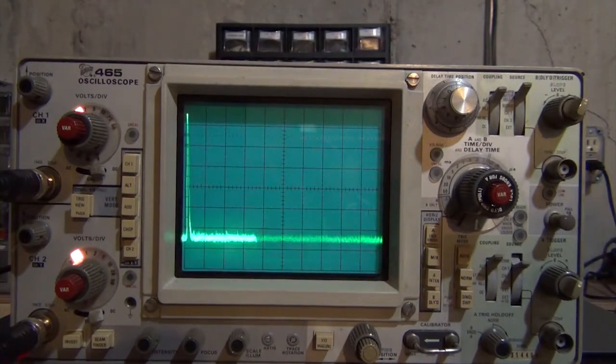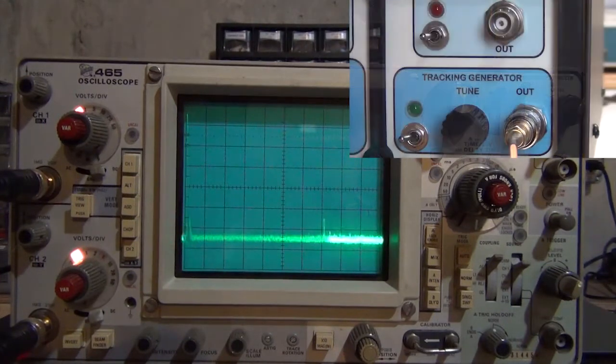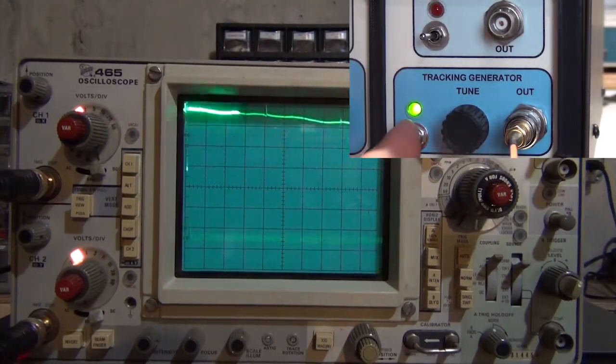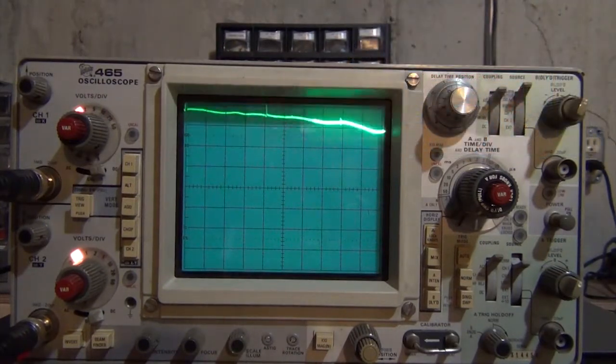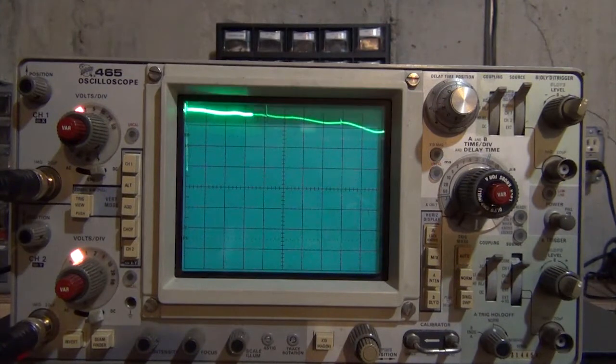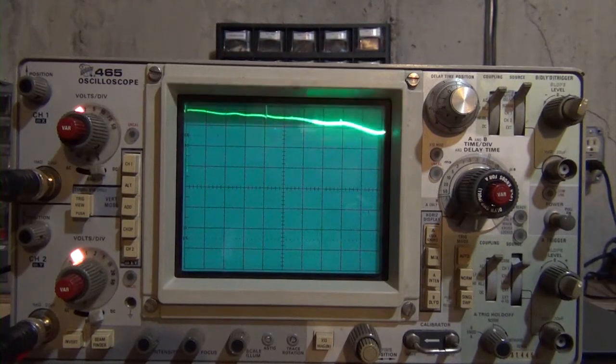The final feature I want to show today is the tracking generator. And what I've done is reconfigured the input cable to the output of the tracking generator. And I'll go ahead and turn that on now. And as you can see, it's definitely not perfectly flat. And one of the features that I would like to have in this SA is a way to normalize this. But for the basic filters that I've been checking out at HF frequencies, this works just fine.